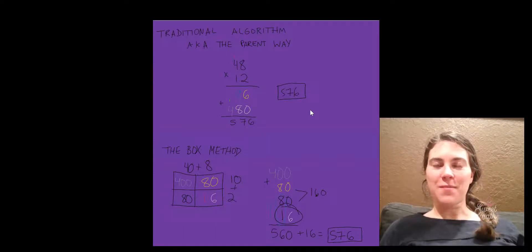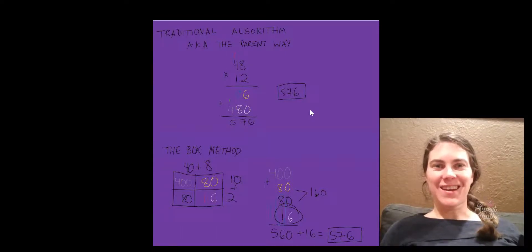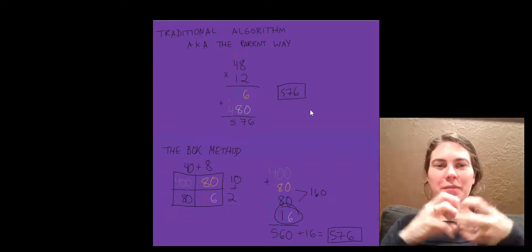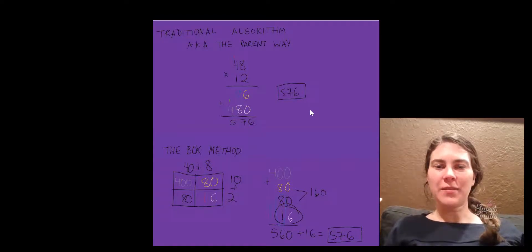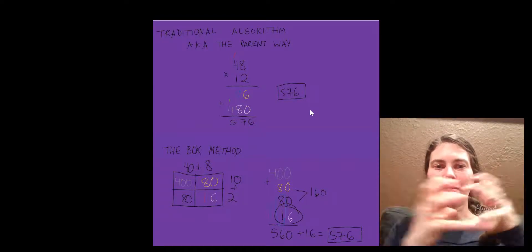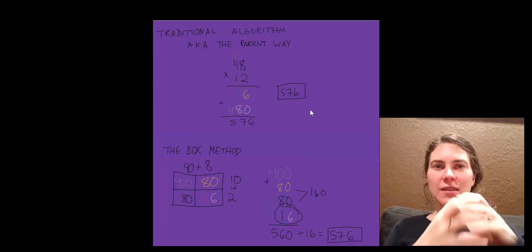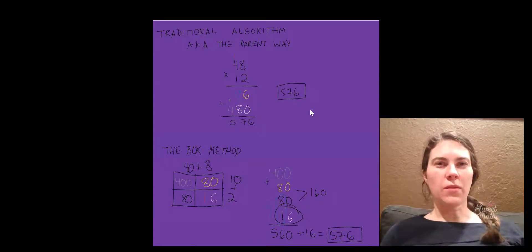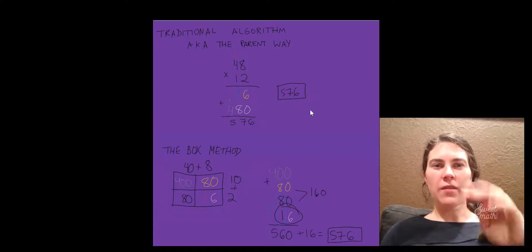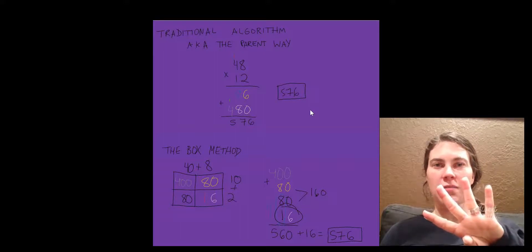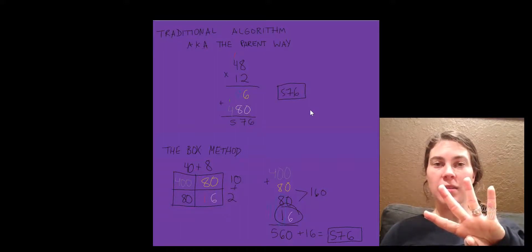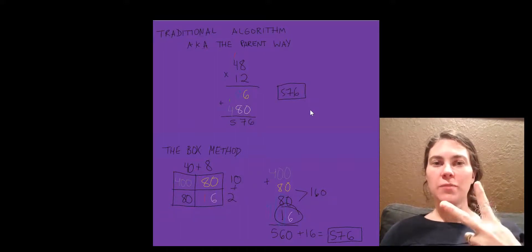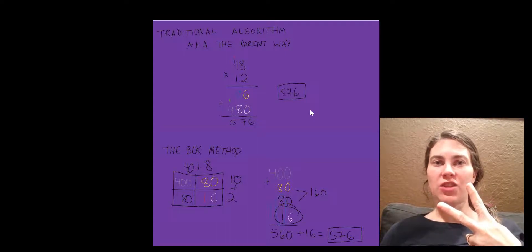So when you look at them color coded, and you see that they've been pulled apart in different ways, and you see that they've been pushed together in different ways, I want to show you one more thing. This is how the 4 pieces of the box method, those are the partial products method, becomes the 2 pieces that you see in the traditional algorithm.